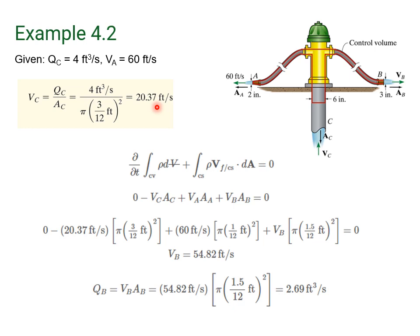Now we're going to apply the continuity equation throughout this problem. Remember, there are two parts of the continuity equation. The first part has to do with how much mass is being generated inside the volume. The second part deals with the flow rate through the control surfaces. First, we need to define our control volume — in this example, we'll take the part outlined in red, and it's going to be a fixed control volume. We keep track of how much fluid comes in and how much goes out. In this case, the water is just moving in and out; there's no mass being generated inside the control volume, so this first term is zero.